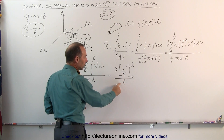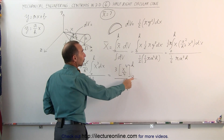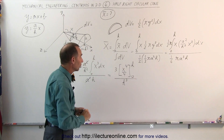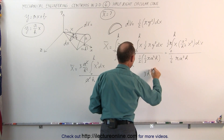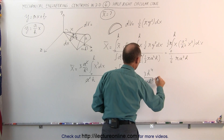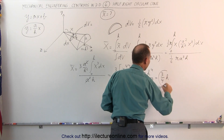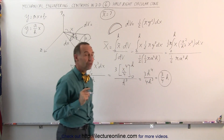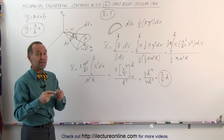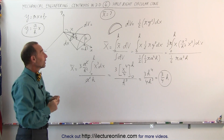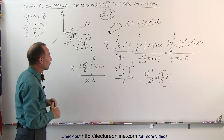Integrating the numerator gives three times x to the fourth over four, evaluated from zero to h, divided by h cubed. Plugging in the upper limit gives three h to the fourth divided by four h cubed, which equals three-fourths h. That is the x-coordinate of the centroid of a half right-circular cone — the same as for a full cone due to symmetry in the x-direction.